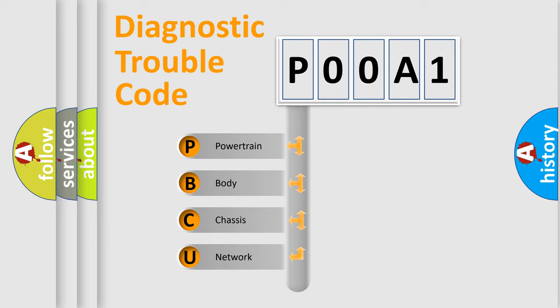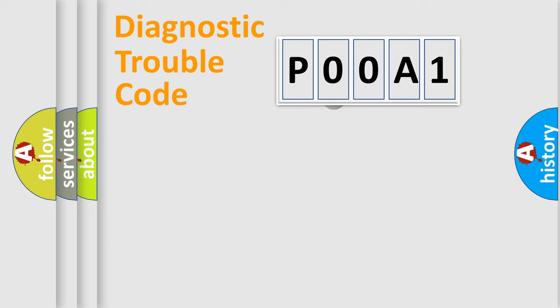We divide the electric system of automobile into four basic units: Powertrain, Body, Chassis, and Network. This distribution is defined in the first character code.